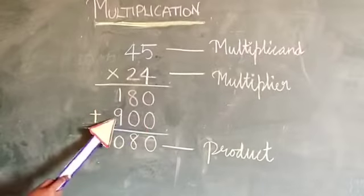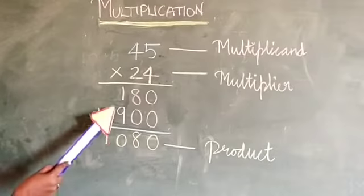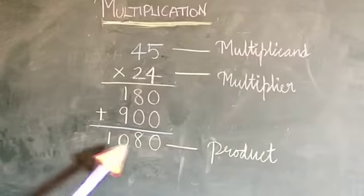Then we have to add this part. 0 plus 0 is 0. 8 plus 0 is 8. 9 plus 1 is 10. So the product, that is the answer, is 1080.